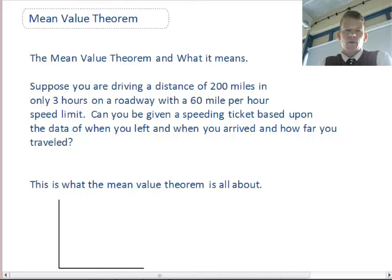We're going to talk first about a consequence of the mean value theorem. If we look at this problem, suppose that you were driving a distance of 200 miles in only 3 hours on a roadway with a 60 mile per hour speed limit. Can you be given a speeding ticket based upon the data of when you left and when you arrived and how far you went?